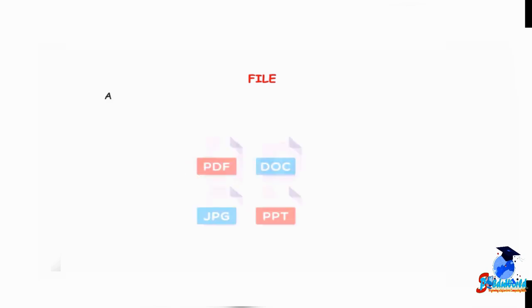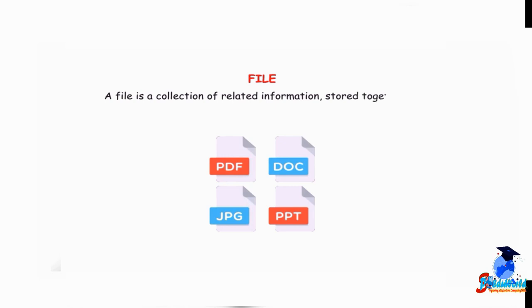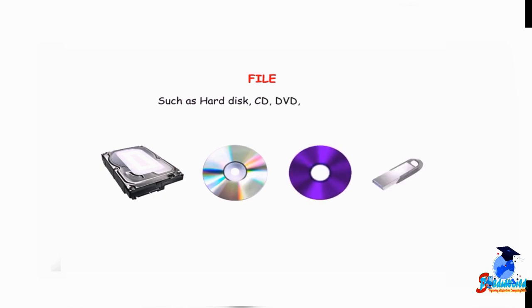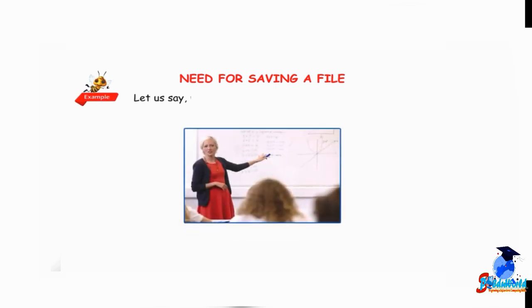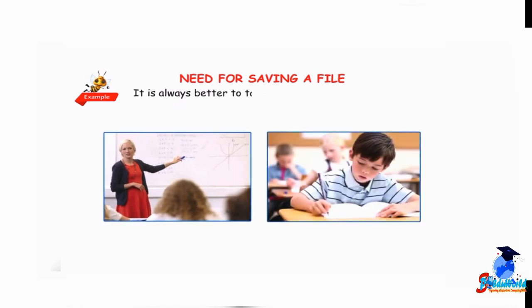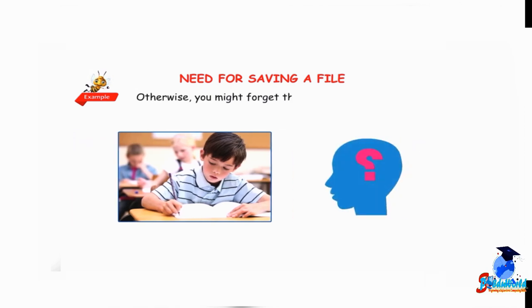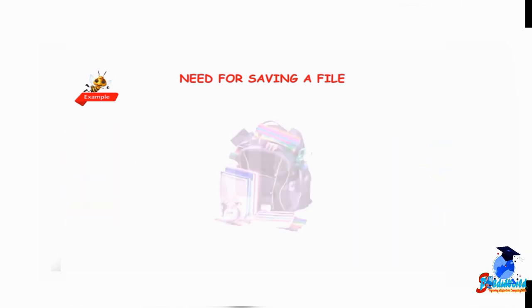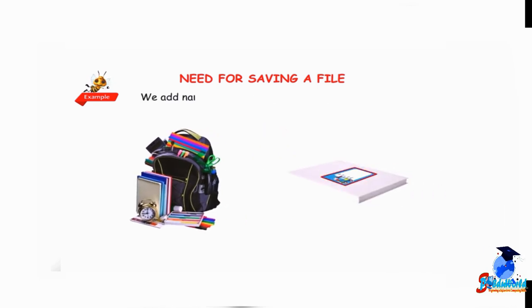Just as we keep important papers and documents in a file, any information in a computer is saved in the form of a file. A file is a collection of related information stored together on some storage device such as hard disk, CD, DVD or pen drive. For saving a file — when your teacher explains any concept in class, it is always better to take notes and store them in your notebook, otherwise you might forget during exams.